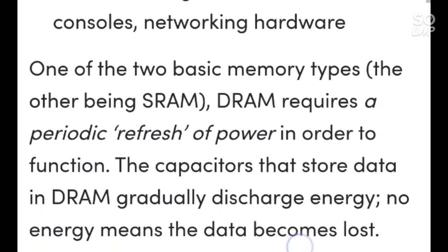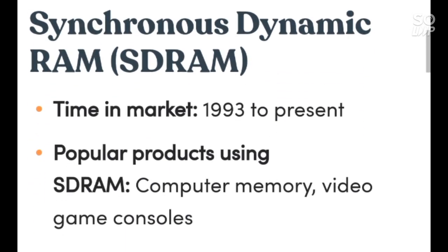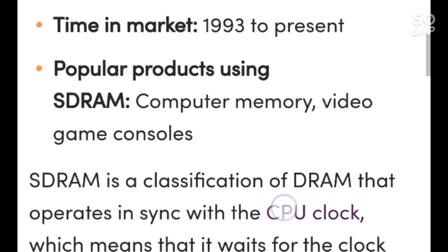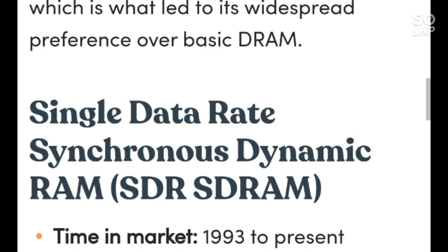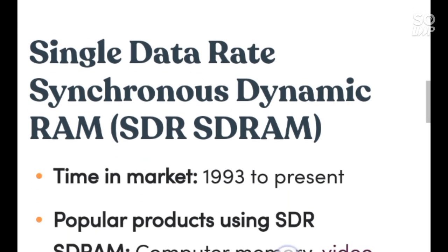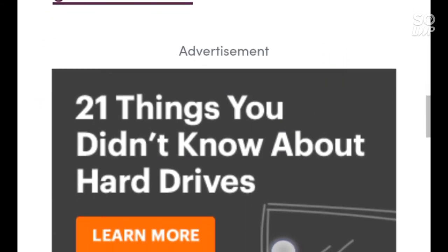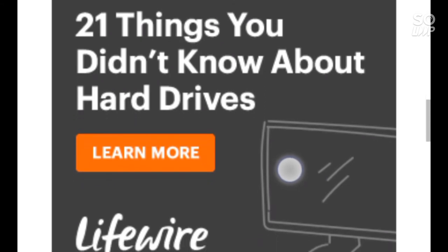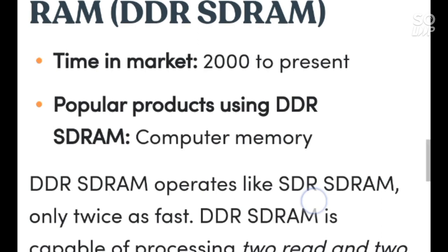Dynamic RAM (DRAM): time in market — 1970s to mid-1990s. Popular products using DRAM include consoles and networking hardware. Synchronous Dynamic RAM (SDRAM): time in market — 1993 to present. Popular products using SDRAM include computer memory and video gaming consoles.